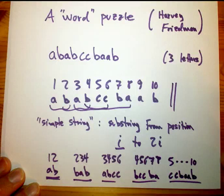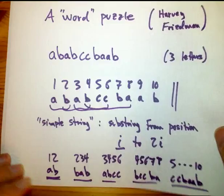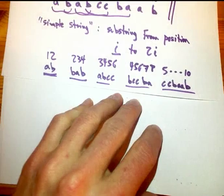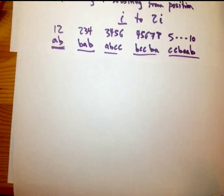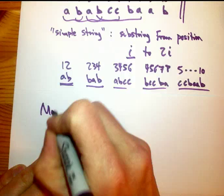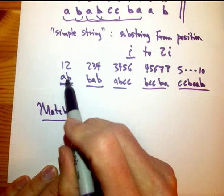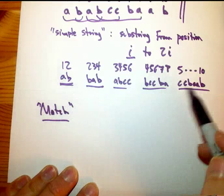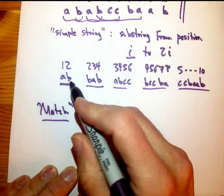Now, the rule is we want to avoid what I'm going to call a match between simple strings. A match between simple strings is any time that one of the earlier strings, and therefore smaller strings, can fit inside one of the later strings. That means you can take one of the later strings and just cross out letters and get the earlier string without reordering. That's important.